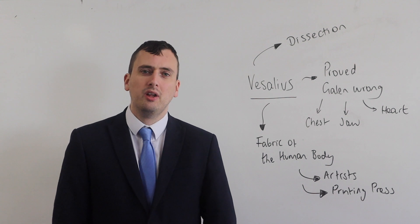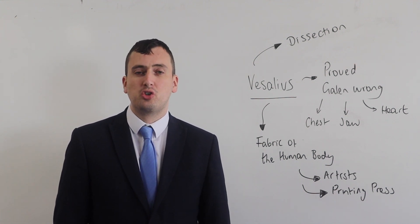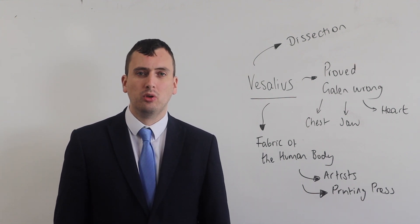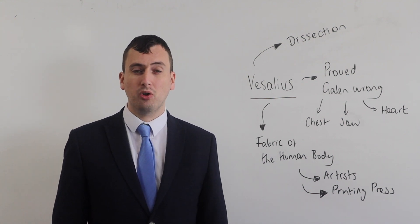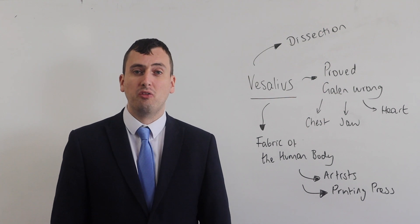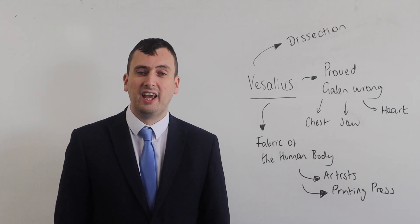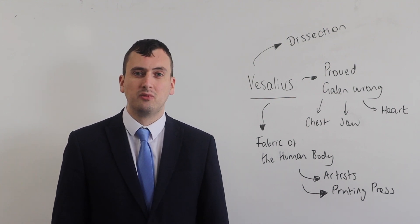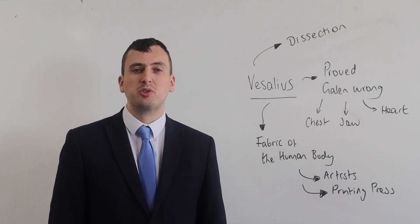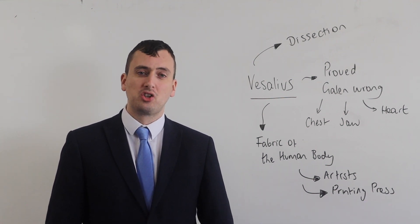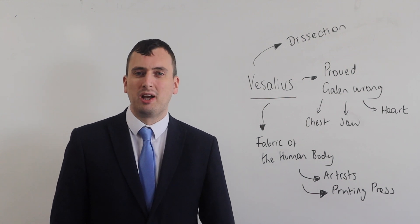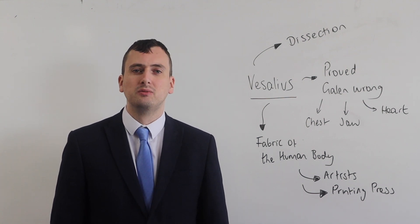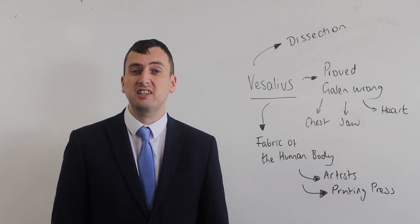For example, Vesalius was able to prove that the jaw bone was just one bone, whereas Galen believed it was two. Vesalius also proved that the breast bone and chest were made up of three different bones, whereas Galen believed it was five. Vesalius was also able to prove that there were no invisible channels in the heart like Galen believed, which would pass blood through the heart — Vesalius proved that these didn't exist.